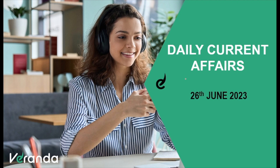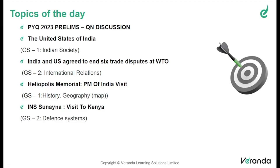Today we are going to see some of the important current affairs topics from the day of 26th of June, 2023. Moving on to the topics of the day. As usual, we'll be discussing some of the important questions from 2023 prelims, and after which we'll be moving to an opinion article analysis from The Hindu — that is 'The United States of India', which can be mapped to GS1 Indian Society.